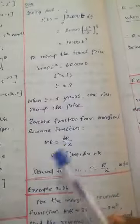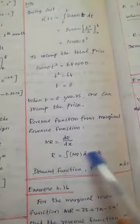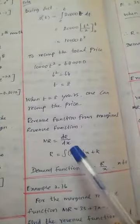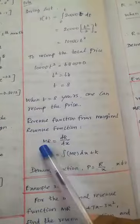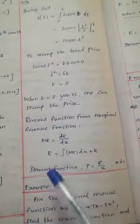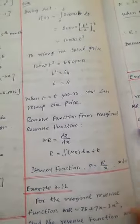Now we're going to find R(x). So R(x) = ∫MR dx. The demand function is p = R/x.